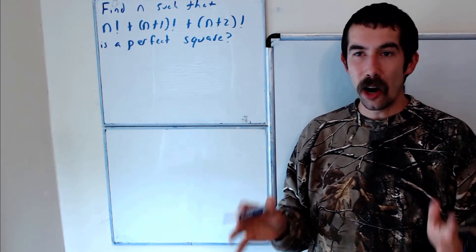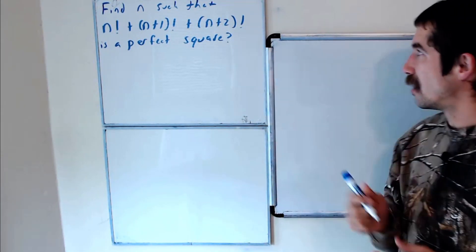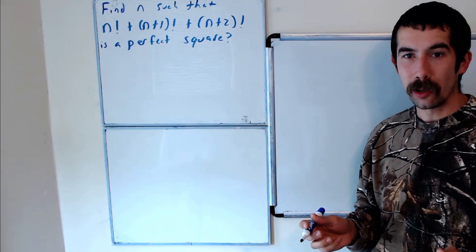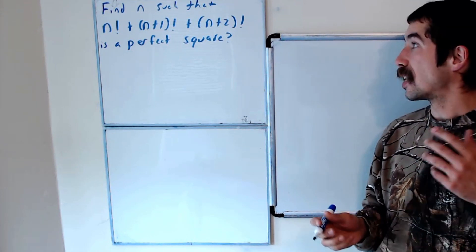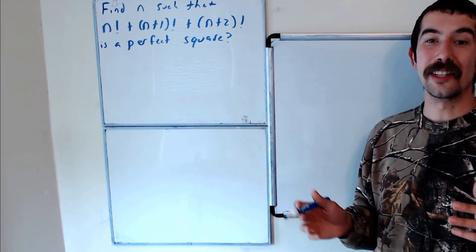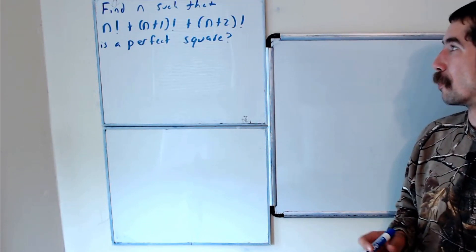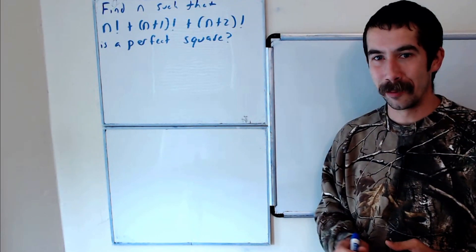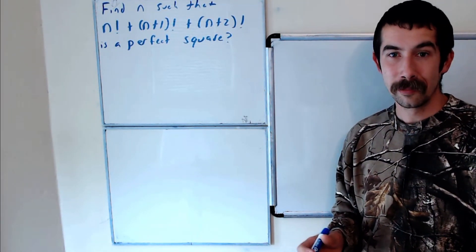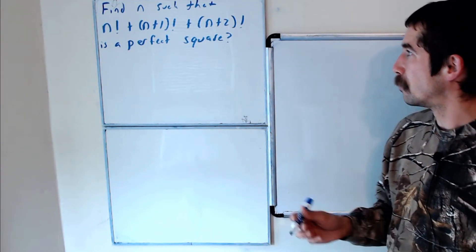Today we're going to find all natural numbers n such that n factorial plus n+1 factorial plus n+2 factorial is a perfect square. I encourage you to try this on your own, or you can just watch me solve it.